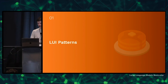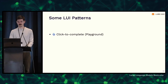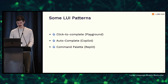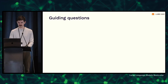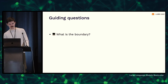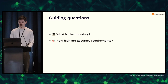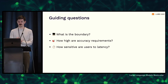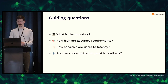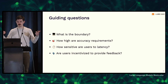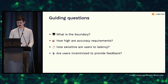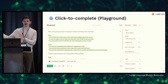Now let's go through some language user interface patterns. We've seen the click-to-complete pattern in the OpenAI playground, autocomplete in GitHub Copilot, the command palette in Replit and other software, and one-on-one chat in ChatGPT. The guiding questions as we review these: What's the interface boundary? How high are the accuracy requirements? How sensitive are users to latency? Are users incentivized to provide feedback and get that data flywheel going? This isn't prescriptive — it just pays to notice what's going on and that might lead to thoughts you wouldn't have had before.